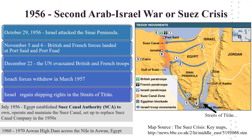The Israeli forces withdrew in March 1957. Israel did not win freedom to use the Canal, but it did regain shipping rights in the Strait of Tiran. Egypt established the Suez Canal Authority in July 1956, which owns, operates and maintains the Suez Canal. It was set up to replace the Suez Canal Company, which had resulted in the Suez crisis. Egypt finally built the Aswan High Dam across the Nile in Aswan, Egypt, between 1960 and 1970.